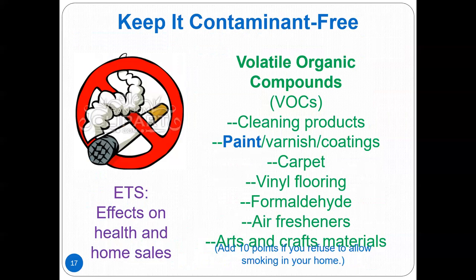The sixth principle is keep it contaminant free. Many products release contaminants into the air causing headaches, nausea, certain types of cancers, and damage to body systems. Always follow manufacturer's directions, do not mix chemicals such as Clorox and ammonia, use products in well-ventilated areas, and only purchase what you need. Examples of volatile organic compounds, or VOCs, brought into the home include cleaning products, paint, carpet, vinyl flooring, formaldehyde, air fresheners, and arts and crafts materials.